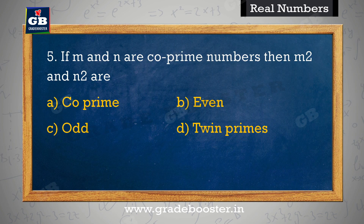If m and n are co-prime numbers, then m² and n² are. Yadi m aur n co-prime numbers hain, toh m² aur n² hain. A. Co-prime, B. Even, C. Odd, D. Twin primes.